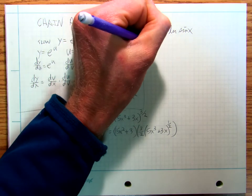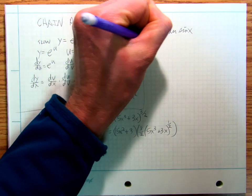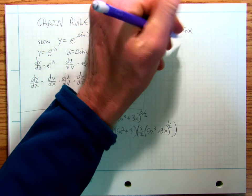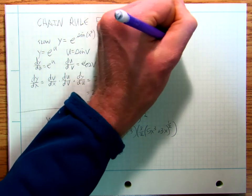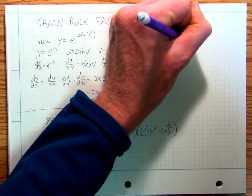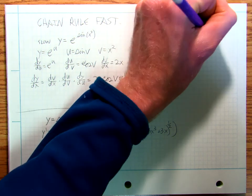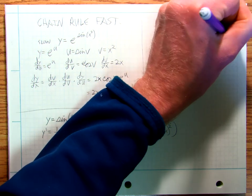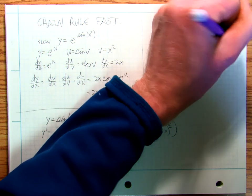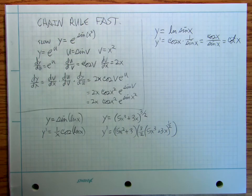Y equals ln x. Okay, so y prime, derivative of the inside times the derivative of the outside. That's something really important for later. Okay, so that's chain rule fast. Next video is going to be product rule fast.